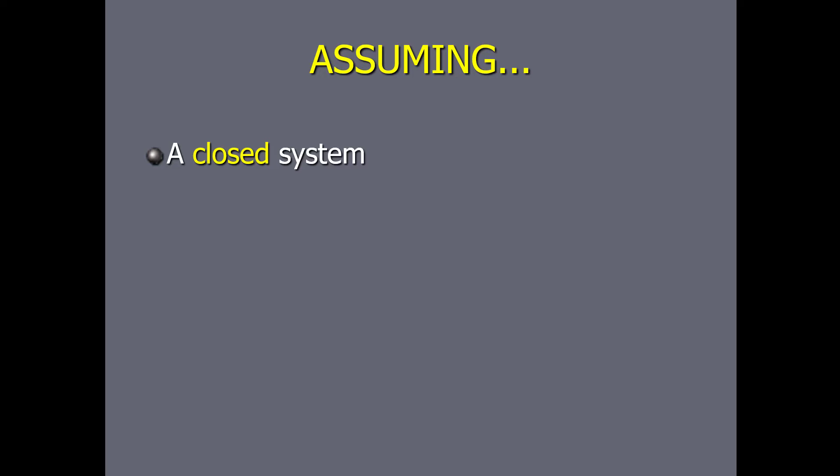A closed system is basically like being in your house where no one can go out and no one can come in. Closed system means no new parents or daughters have come in, and no parents or daughters are going out. The second assumption is that there is a constant decay rate.